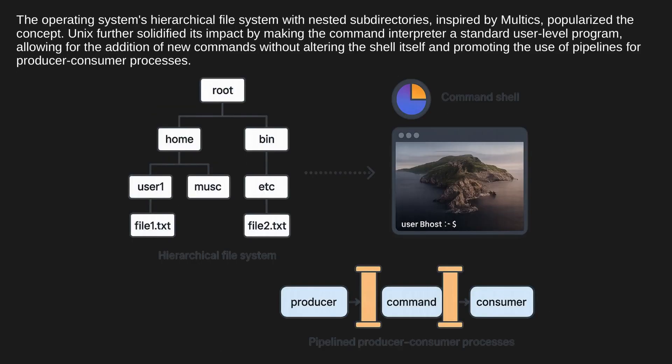The operating system's hierarchical file system with nested sub-directories, inspired by Multics, popularized the concept. Unix further solidified its impact by making the command interpreter a standard user-level program, allowing for the addition of new commands without altering the shell itself, and promoting the use of pipelines for producer-consumer processes.